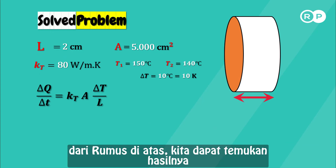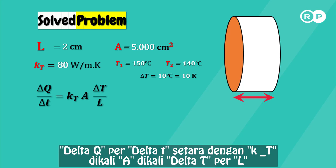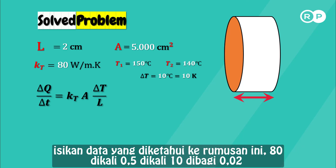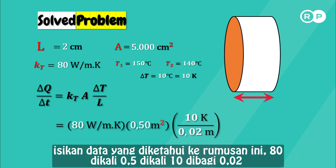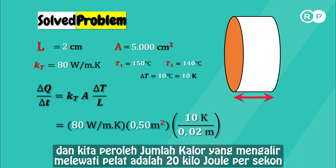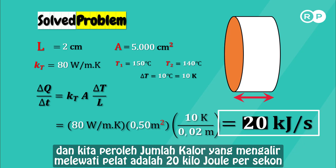From the formula, we can find ΔQ/Δt = KT × A × ΔT / L. Substituting values: 80 × 0.5 × 10 / 0.02, we find ΔQ/Δt equals 20 kilojoules per second.